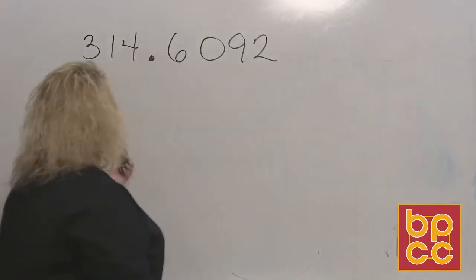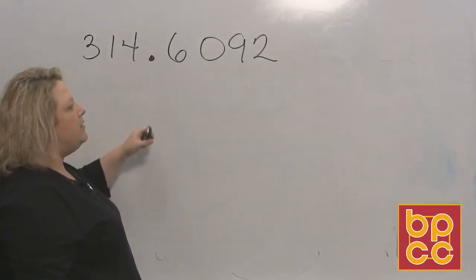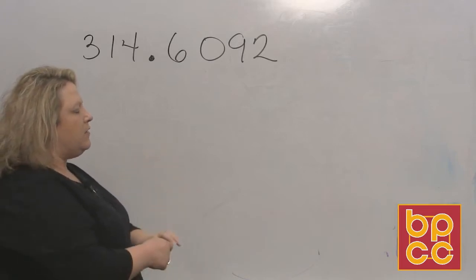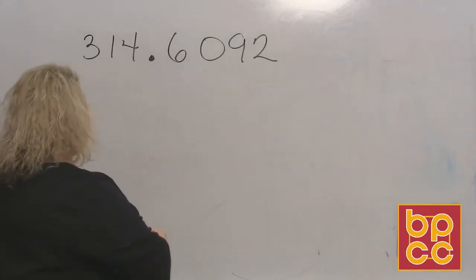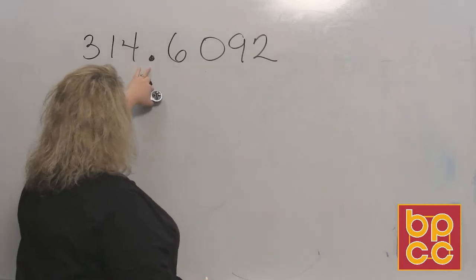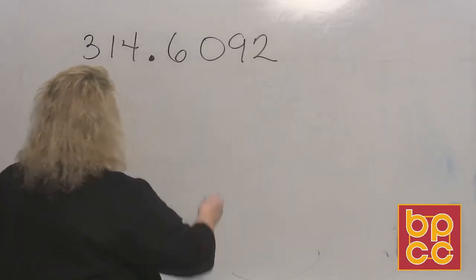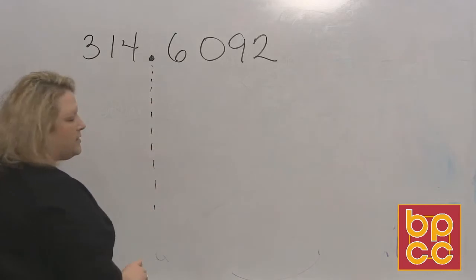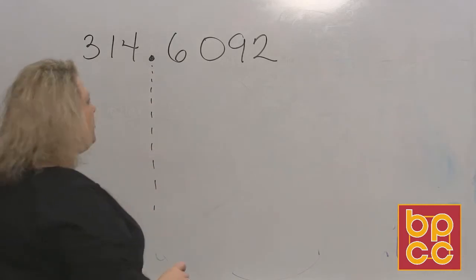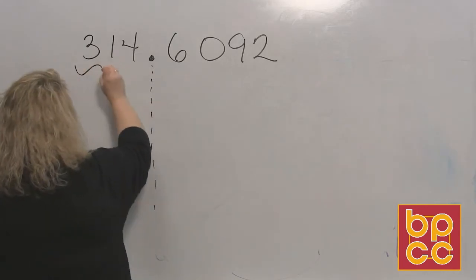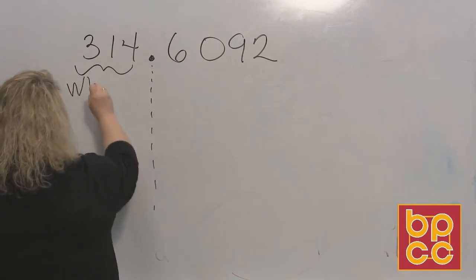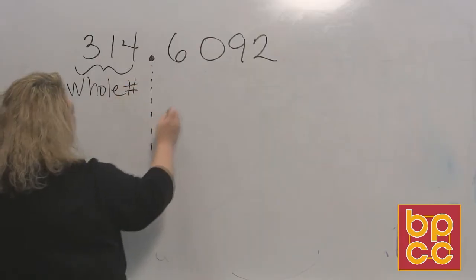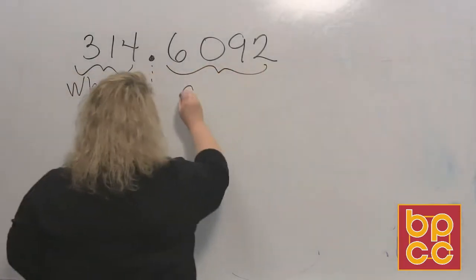So you have this number: three hundred fourteen and six thousand ninety-two ten-thousandths. Let's talk about these place values. This decimal point divides everything into two parts — you have the whole number part and then you have the decimal part.